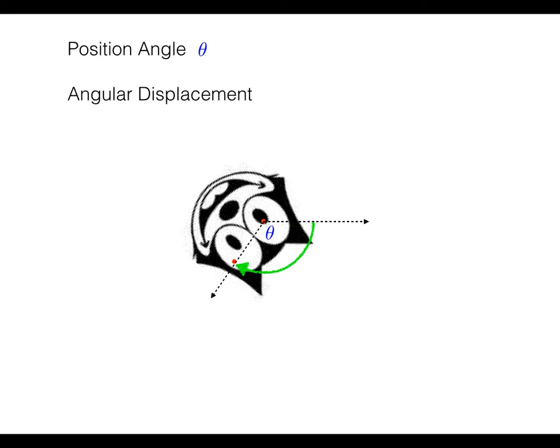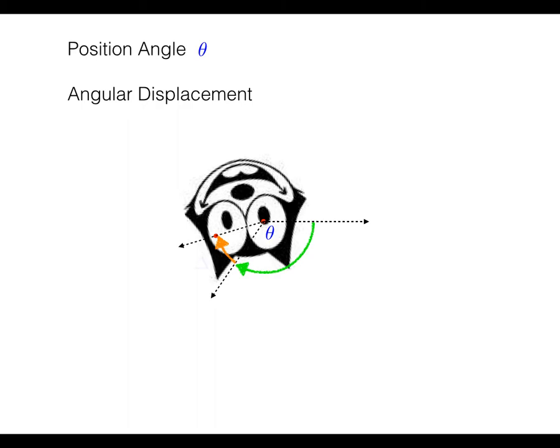How about angular displacement? Well, think back to linear motion. What was displacement about when we talked about linear motion? It was really about a change in position. So we can change the position angle like this and call this the final and it's the initial. And the change in position angle is theta f minus theta i. And that also is known as angular displacement.